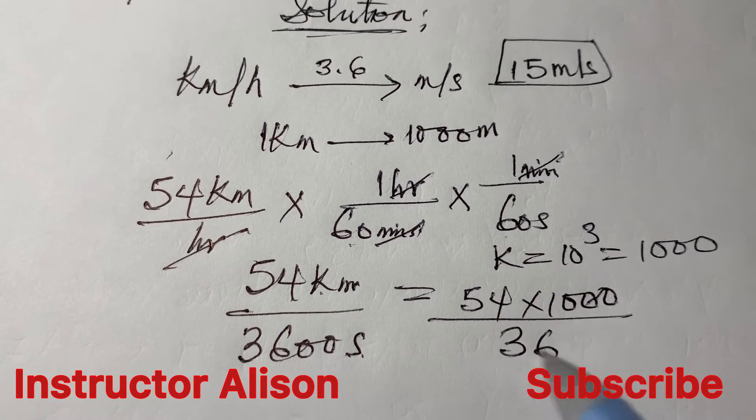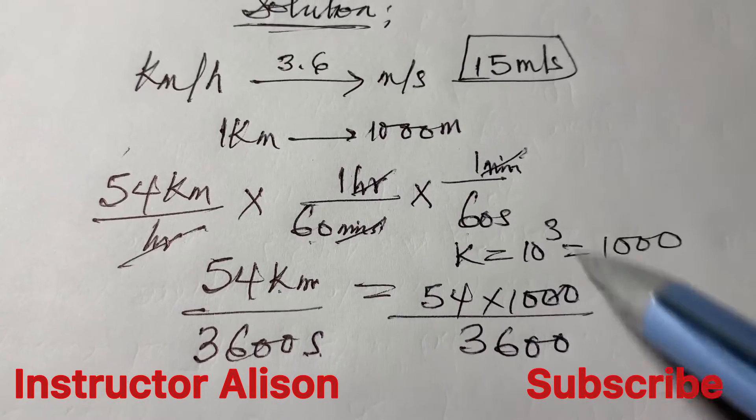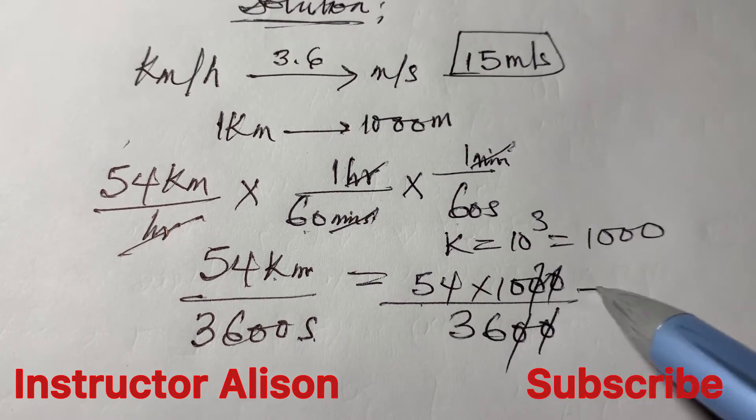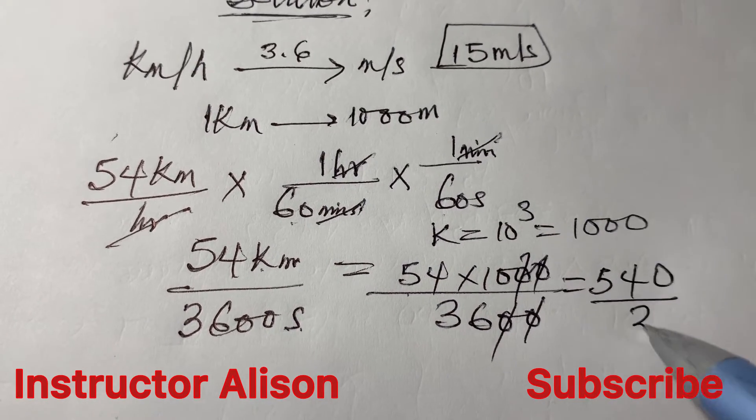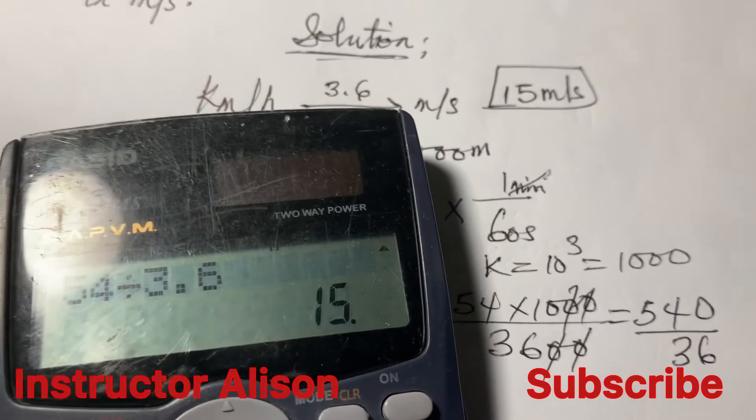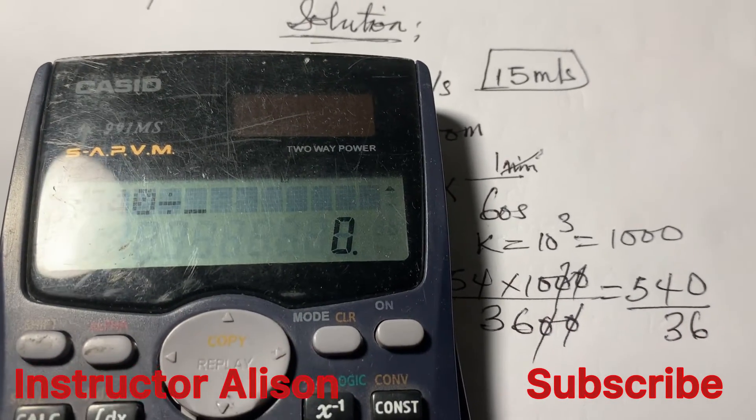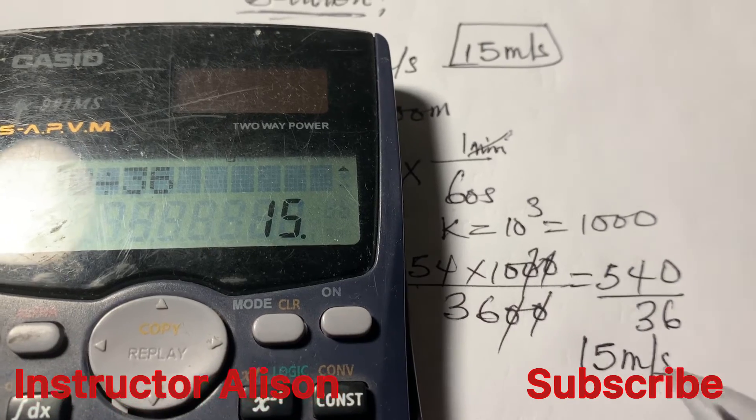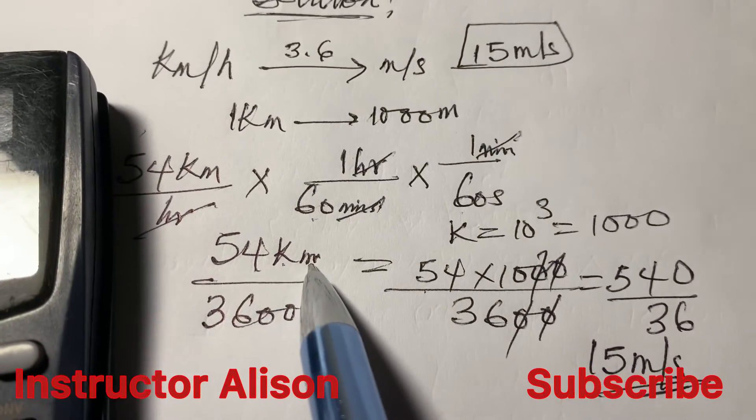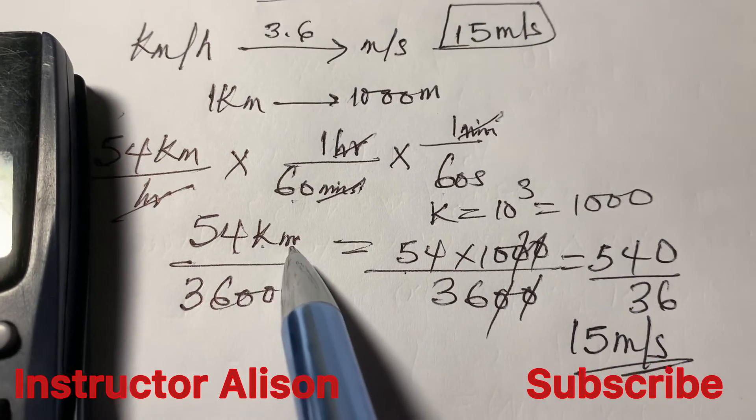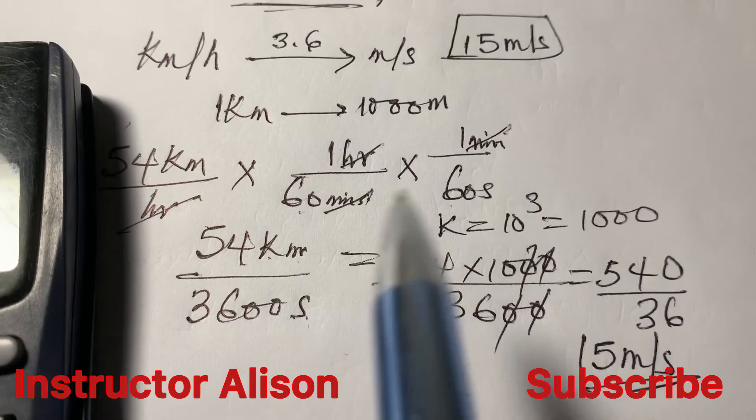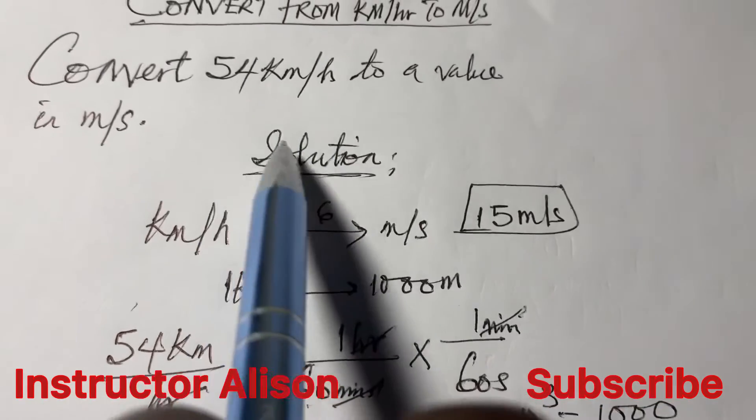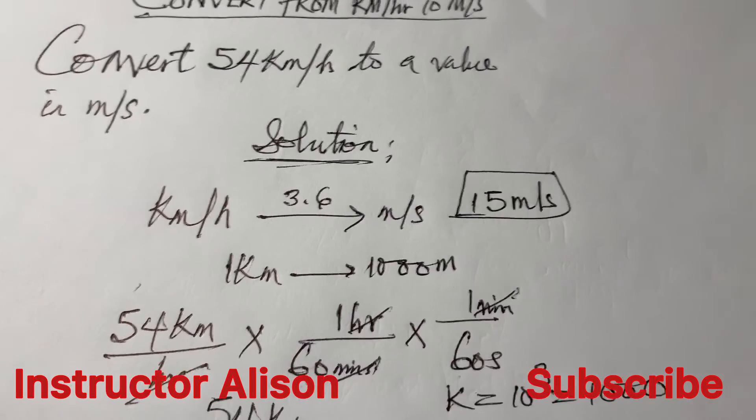Then it should have the answer also as 15 because this zero cancels with this. We're having 54 times 10 which is 540, and if this divides by 36, we have 540 divided by 36 and the result is simply 15. Make sure to keep it meter per second because we have meters on the numerator when we convert kilo to 1000 meters, and seconds at the denominator.